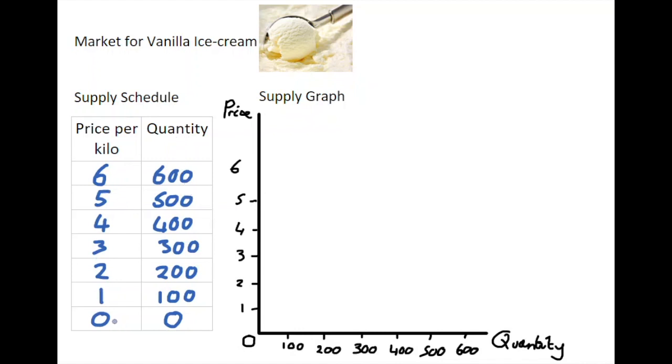You can see down here at a relatively low price the quantity supplied is zero, and as the price per kilo increases on the market, suppliers are willing to supply increasing amounts of vanilla ice cream onto that market, up to a price of six euro where there's 600 in terms of quantity supplied.